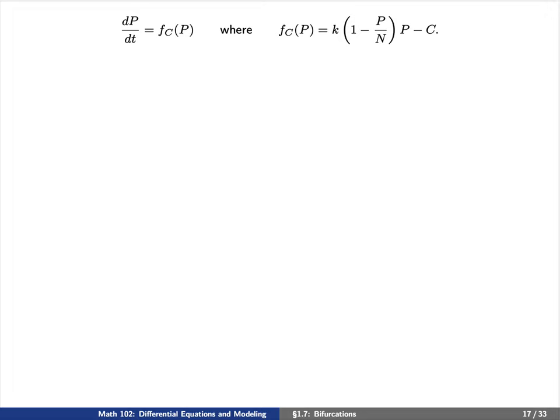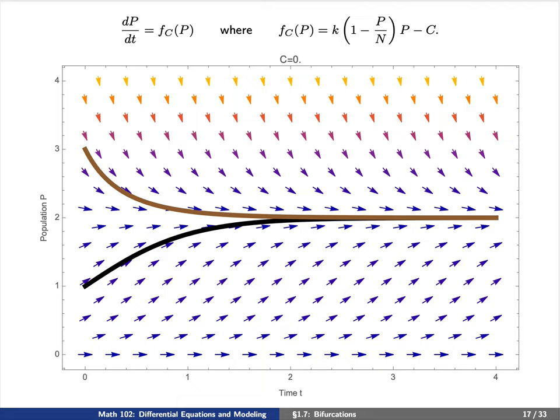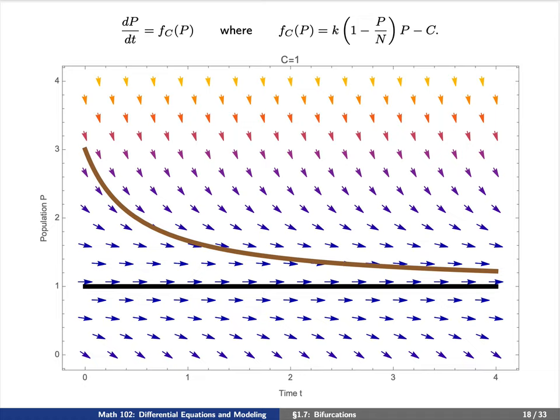If C = 0, we have the usual slope field. You can see the field is broken into two regions: below P = N, the black solution line is increasing up to the equilibrium P = N; above P = N, the brown line slopes downwards back toward P = N. Now let's increase C from 0 to 1. You can see the arrows have flattened out considerably. The black line, which originally showed an increasing fish population, has now become completely flat, and the brown line is a little below where it was when C = 0.